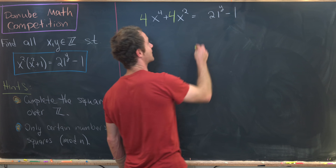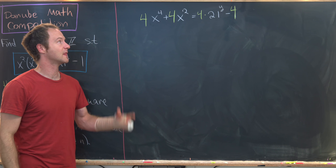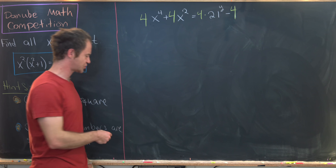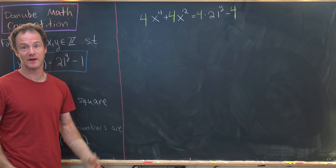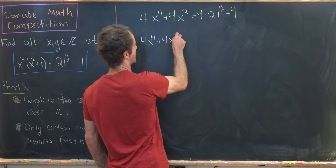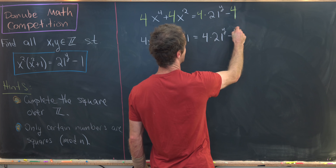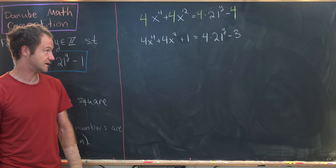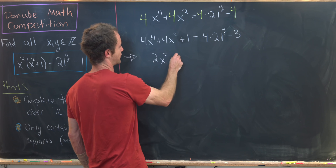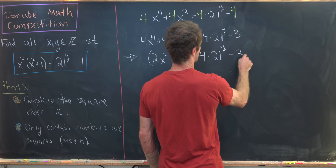Multiplying both sides by 4, then adding 1 to both sides to complete the square, we get: 4x to the fourth plus 4x squared plus 1 equals 4 times 21 to the y minus 3. This factors as: 2x squared plus 1, quantity squared, equals 4 times 21 to the y minus 3.